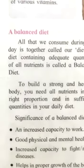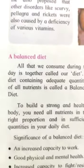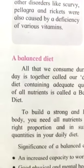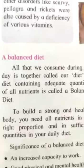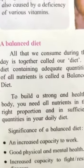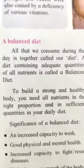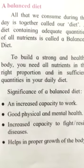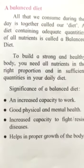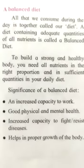What is a balanced diet? A balanced diet is one that contains all nutrients in proper proportion. If the six nutrients are in the right quantity, it is called a balanced diet. To build a strong and healthy body, you need all nutrients in proper proportion. The importance of a balanced diet includes: increased capacity to work, good physical and mental health, increased capacity to resist diseases, and proper growth of the body.